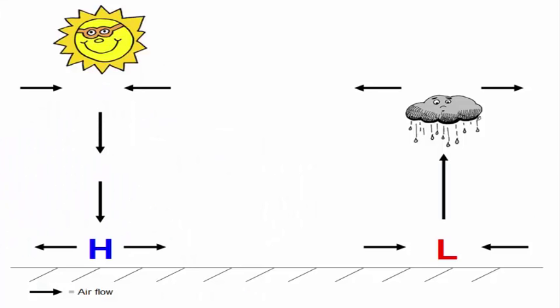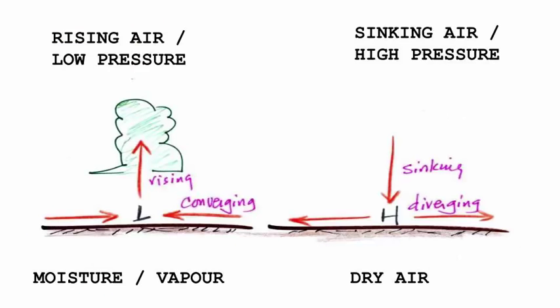Basically, air cools as it rises, which can cause water vapor in the air to condense into liquid water droplets, sometimes forming clouds and precipitation — rainfall. On the other hand, sinking air is associated with warming and drying conditions. So the first important point to keep in mind is: rising air equals moisture, and sinking air equals drying.